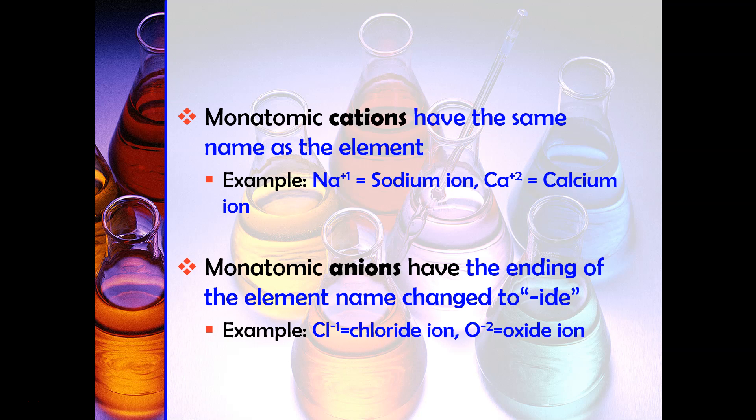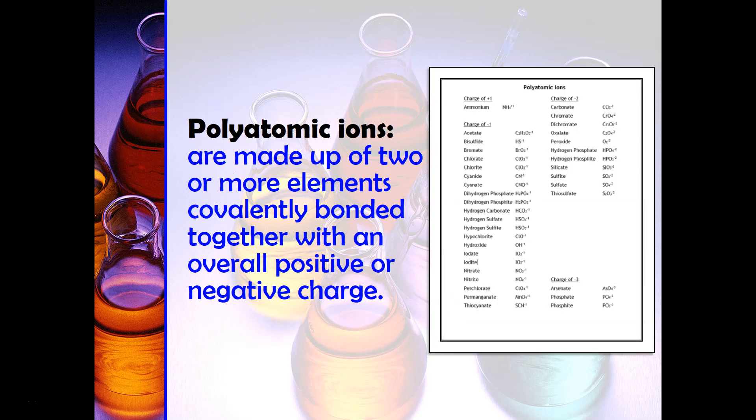Now we're going to move on to polyatomic ions. Polyatomic ions are found on the back of your periodic table and are made up of two or more elements covalently bonded together with an overall positive or negative charge. You will not have to memorize them and you'll be given this reference sheet on every test and quiz.